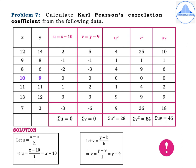The v-squared values are 25, 1, 9, 0, 4, 9, 36 — summation v-squared equals 84. The uv values are 10, 1, 6, 0, 2, 9, 18 — summation uv equals 46. When finding uv values, please be careful with the signs.